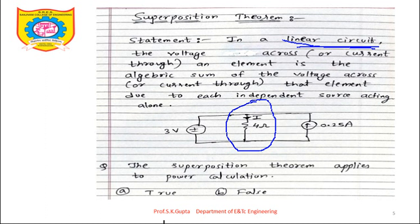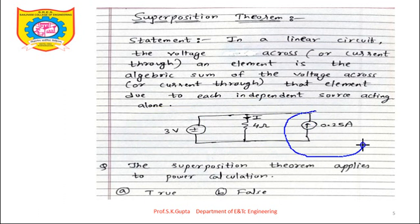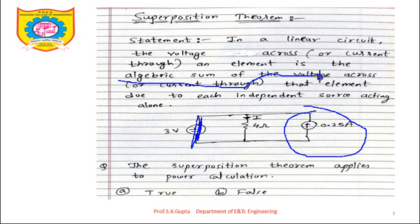In case 1, the 3V source is present and the 0.25A source is turned off. If it is a current source, turning it off means it becomes an open circuit. In case 2, the 0.25A current source is present and the 3V source is turned off — a voltage source turned off is replaced by a short circuit. The current in case 1 is i1, in case 2 is i2, and total current i = i1 + i2 (algebraic sum).